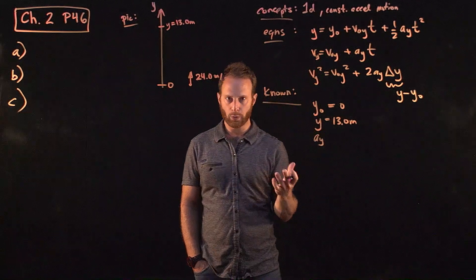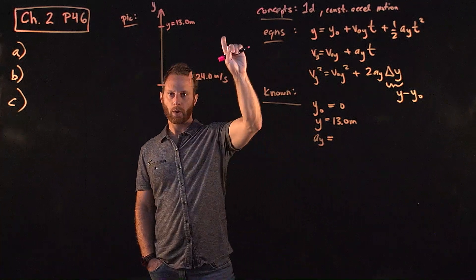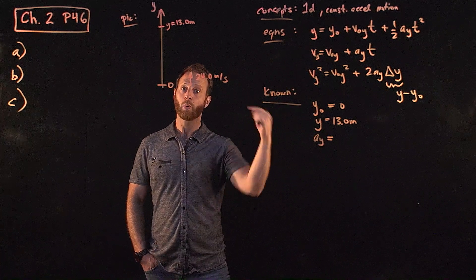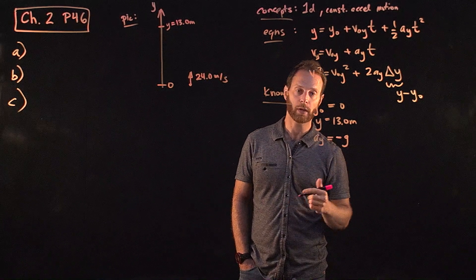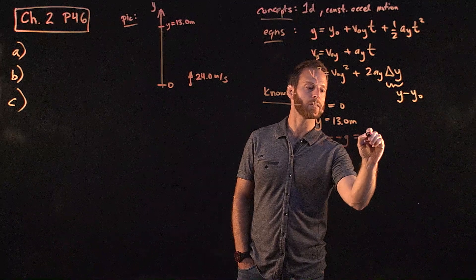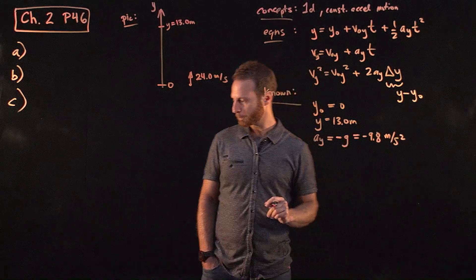The acceleration in the y direction, that's due to gravity. And because we've oriented our coordinate system going up, that means acceleration points down. That means it's negative. So it's minus g. g is that value 9.8. So let's just write this as minus 9.8 and, of course, the unit's meters per second squared. All right.